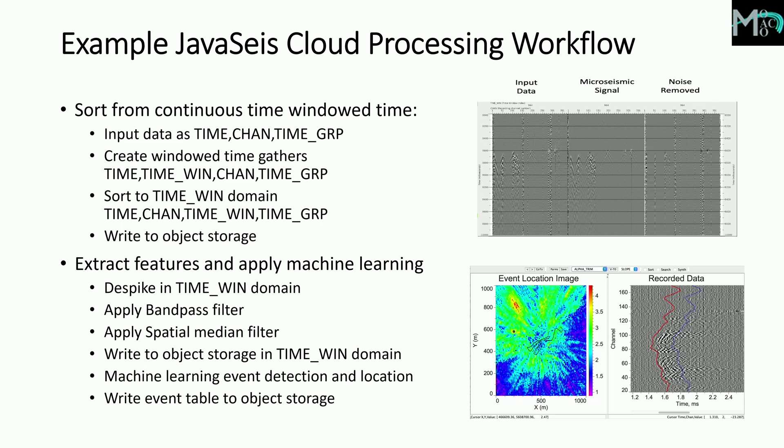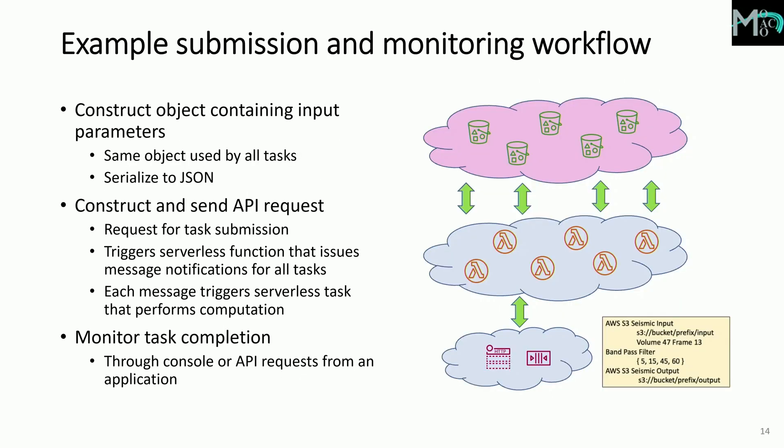For managing and monitoring jobs: the same state object is used for all tasks, serialized to JSON, then API requests are constructed and sent for task submission. This triggers serverless functions that issue message notifications for each task. Each message triggers a serverless task that performs computation, and the whole process is monitored through the API console.